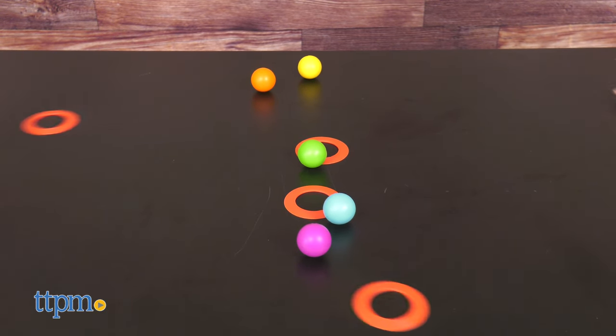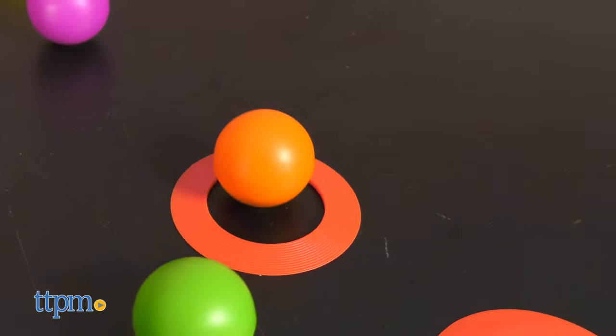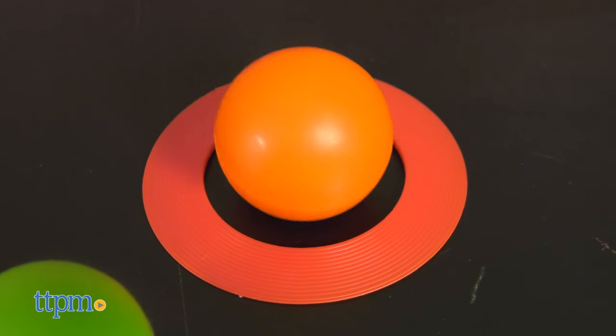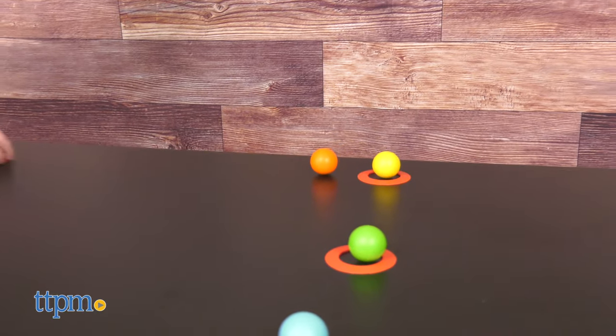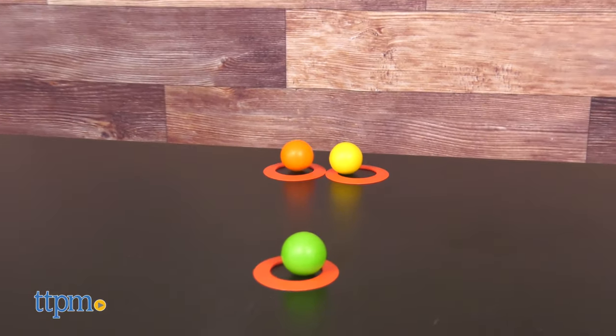At the count of three, both players give a ring a push to make it slide across the table. If a ring slides underneath a ball and stops around a ball, the move is a success and that player tries again with another ring.